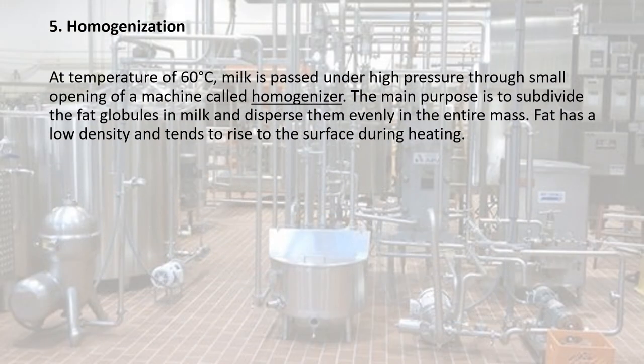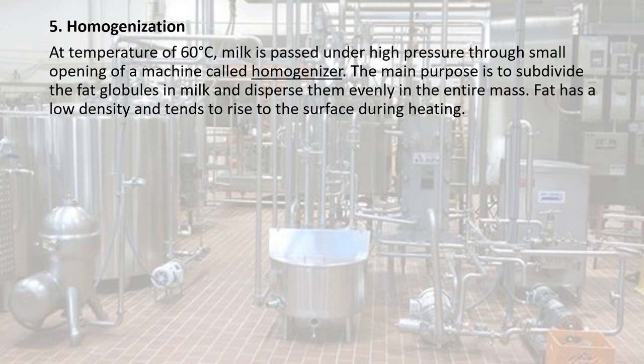Homogenization: at a temperature of 60 degrees Celsius, milk is passed under high pressure through small openings of a machine called a homogenizer. The main purpose is to subdivide the fat globules in milk and disperse them evenly in the entire mass. Fat has a low density and tends to rise to the surface during heating.